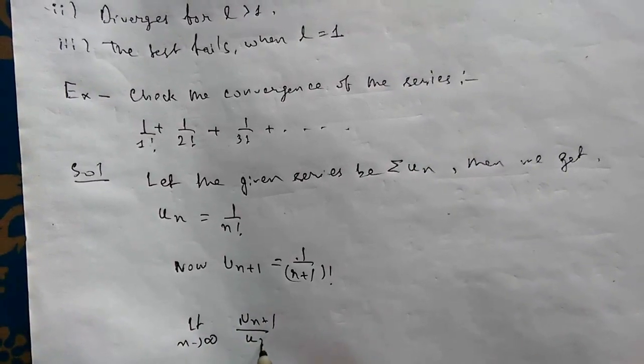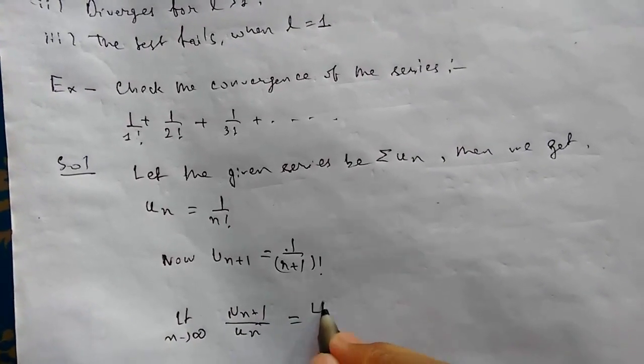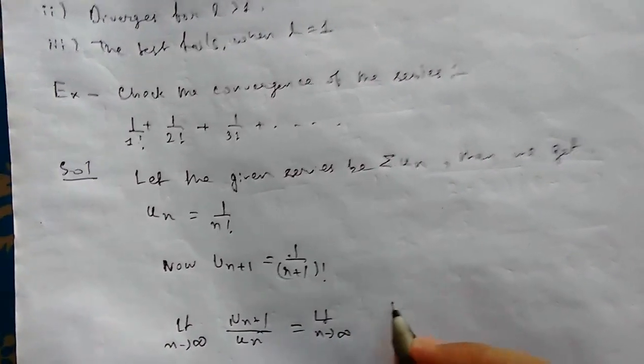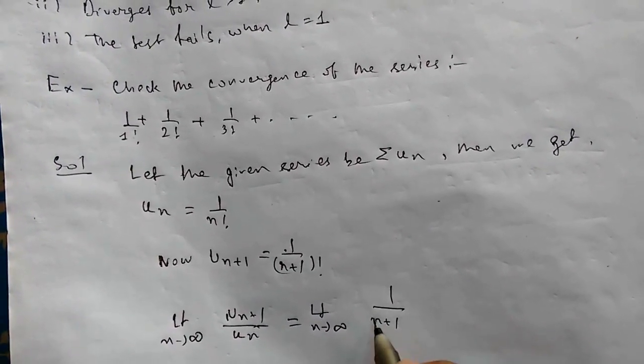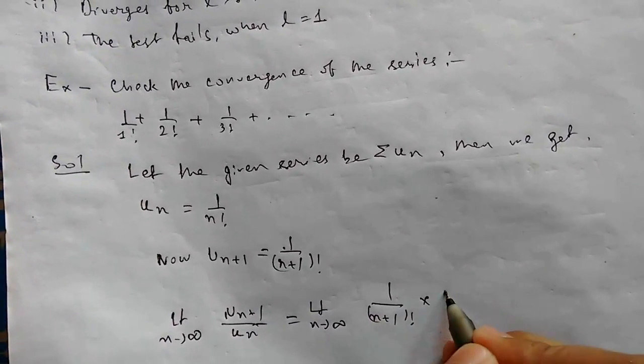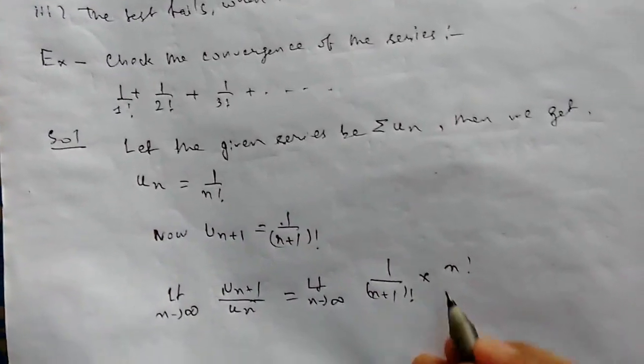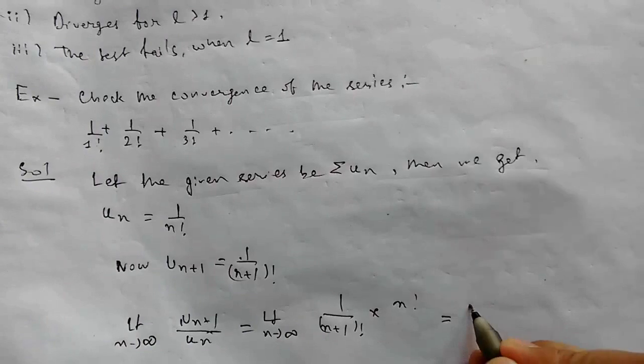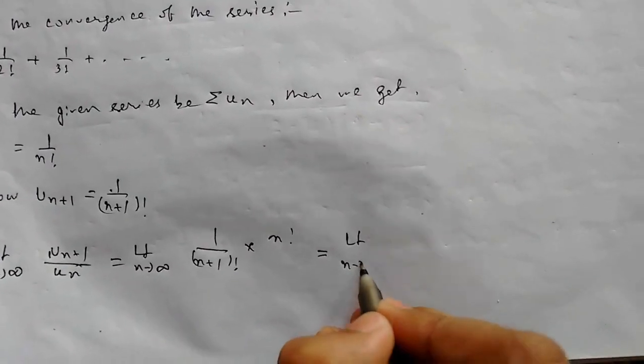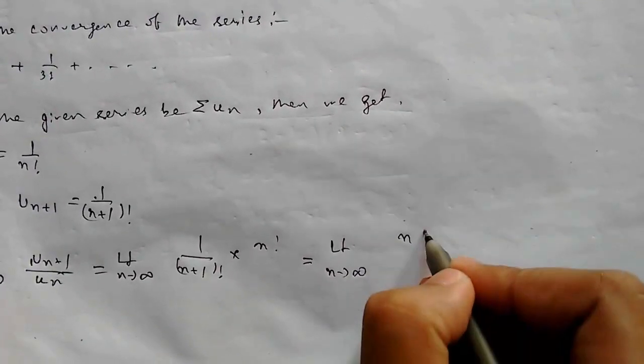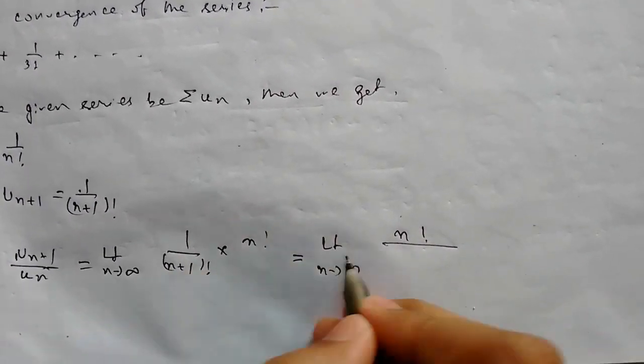upon U_n, we need to calculate this value. So limit n tending to infinity: 1 upon (n+1) factorial times n factorial. This goes in the numerator, so this will be limit n tending to infinity n factorial upon (n+1) factorial. Now we have to break this,